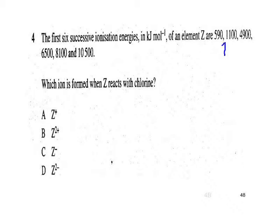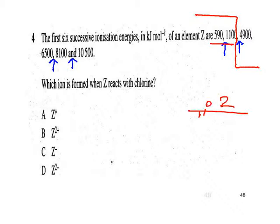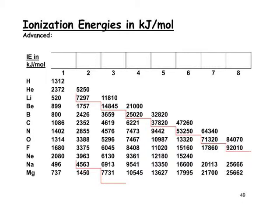Another question on successive ionisation energies — pause and have a go. Where's the big jump this time? It's coming here from about 1,000 up to almost 5,000 kJ/mol. So it's relatively easy to remove the first two electrons, leading us to conclude this is a group 2 element that forms the 2+ ion. With magnesium, relatively easy to remove the first two then a huge jump to the next. With beryllium, relatively easy to remove the first two and a big jump to remove the third. Both are group 2 elements.